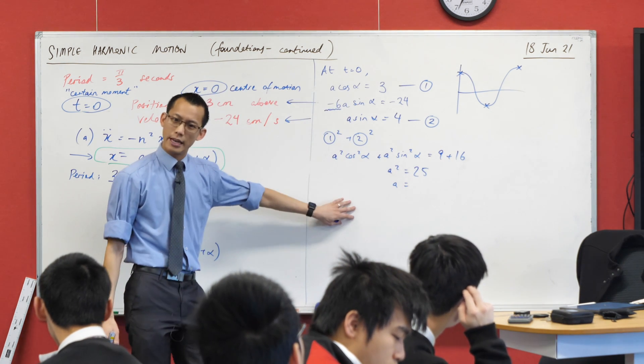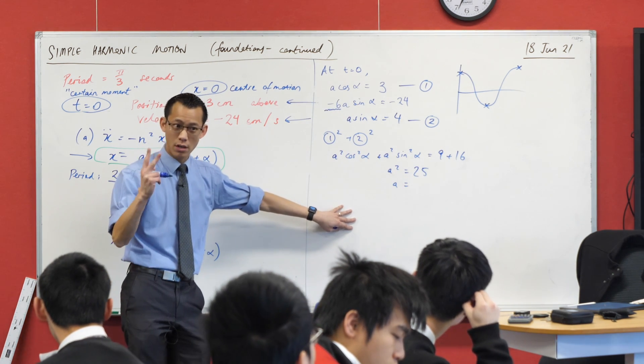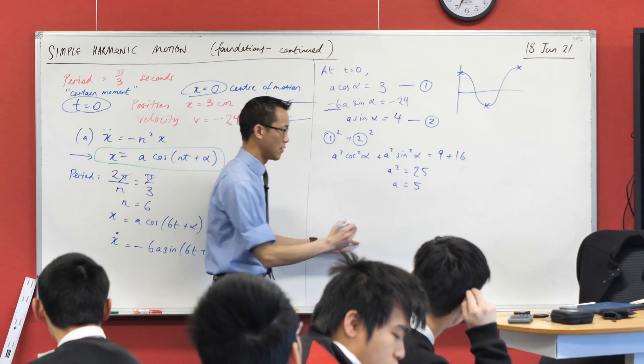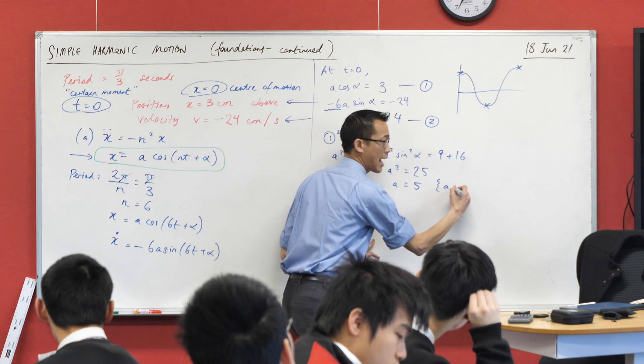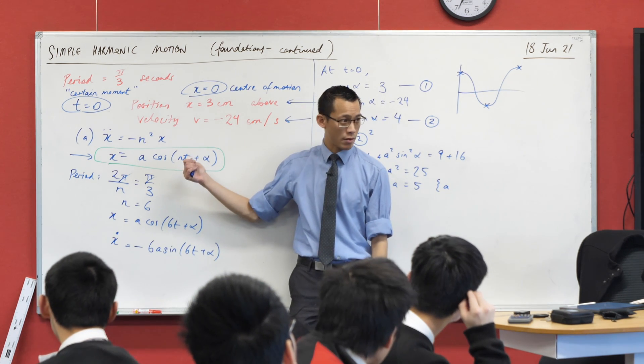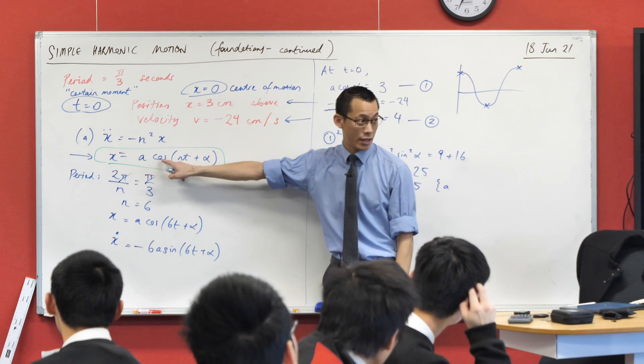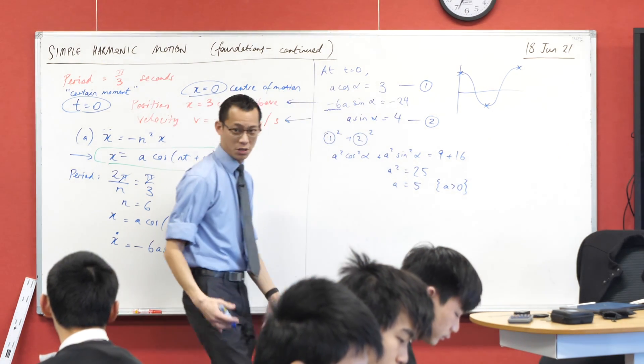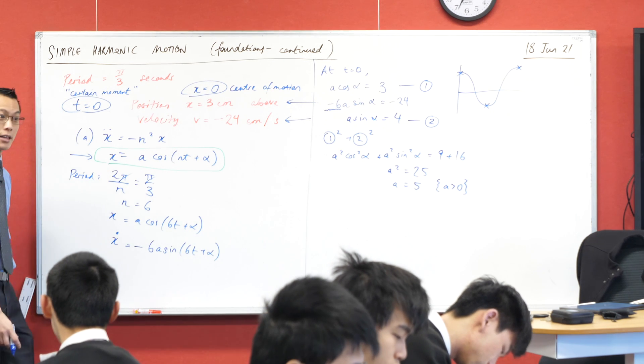And here, while we normally are solving a quadratic and we have to think of two values here, I can actually specify one of them, because why? What is a? It's an amplitude. And I've specified what it is over here, so I can say I'm only taking a positive value because an amplitude is scalar. Does that make sense?